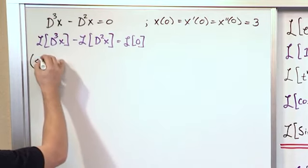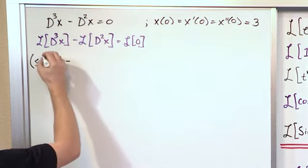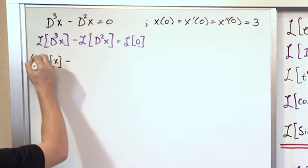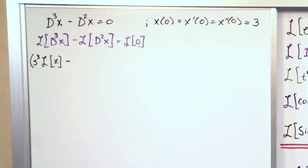What you're going to have is s times the Laplace Transform. Then you have a minus, and actually it's going to be an s. Let me erase this and give a little more space. It's going to be s³. The first s that you have always matches the order of the derivative that you have.